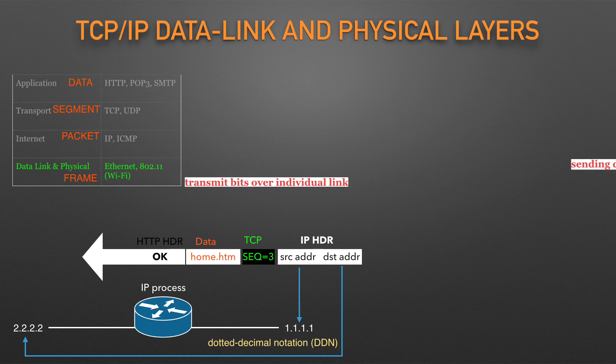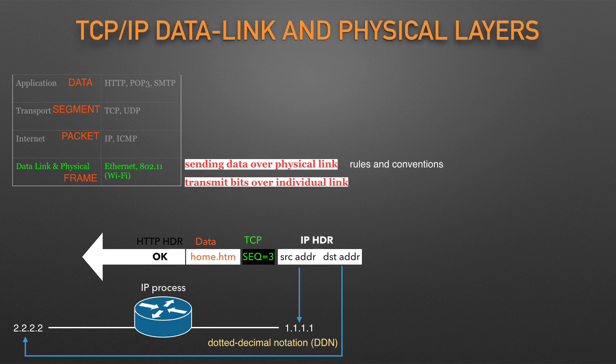The TCP/IP model's data link and physical layers define the protocols and hardware required to deliver data across some physical network. Some standards define both the data link and physical layer functions. The physical layer defines the cabling and energy — electrical signals — that flow over the cables. Rules and conventions for sending data over the cable exist in the data link layer of the TCP/IP model. When a host's or router's IP process chooses to send an IP packet to another router or host, that host or router uses link layer details to send that packet to the next host or router.